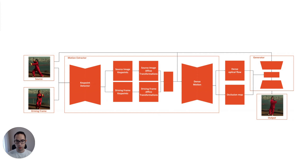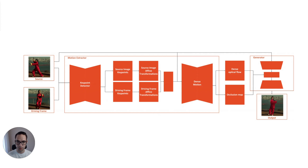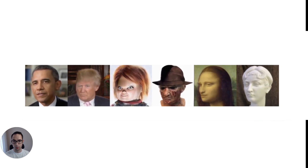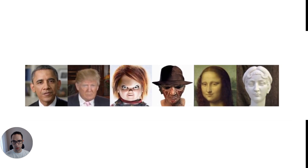The whole process is separated into two parts: motion extraction and generation. As input, the source image and the driving video are used. The motion extractor utilizes an autoencoder to detect key points and extracts a first-order motion representation, consisting of sparse key points and local affinity transformation. These, along with the driving video, are used to generate dense optical flow and an occlusion map with the dense motion network. Then the output of the dense motion network and the source image are used by the generator to render the target image. This work outperforms state of the art on all benchmarks, and it has features that other models just don't have.